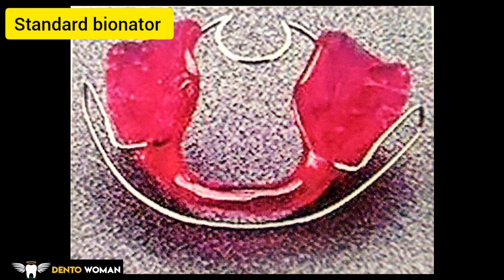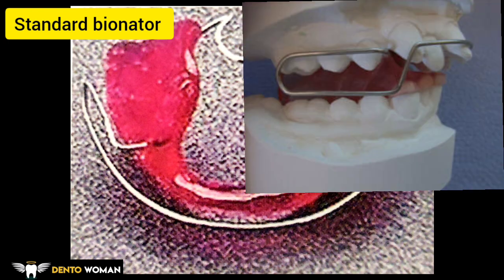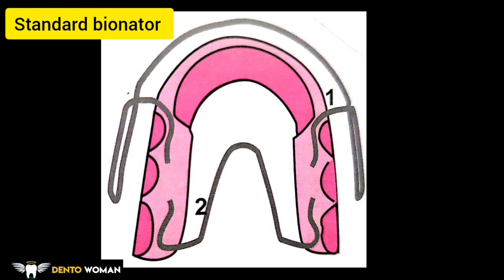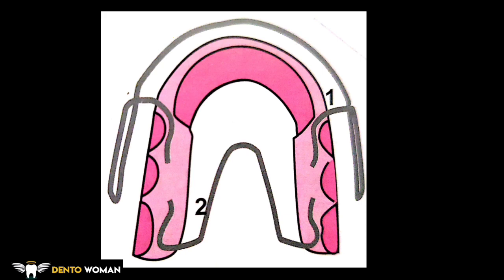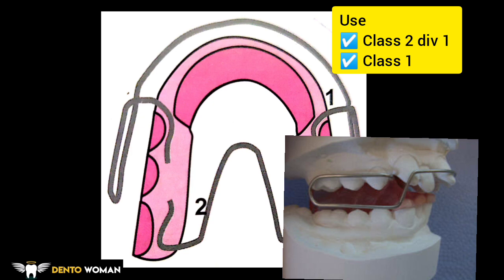This is the standard bionator, with a line diagram showing the wire components. Component 1 is the labial or vestibular wire of 0.9 mm, and component 2 is the palatal arch of 1.2 mm. This standard appliance is typically used for the treatment of class 2 div 1 and class 1 cases with narrow dental arches.